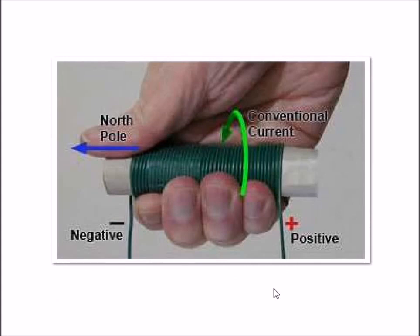To determine the magnetic polarity of an electromagnet, you'll do the following. Take the coil in your right hand and position your thumb as shown here. Observe the direction in which the coil is wound, connect this side to the positive, this side to the negative, your thumb will point to the north pole.